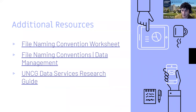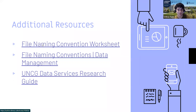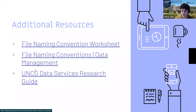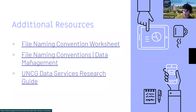Here are additional resources. There's a worksheet on file naming conventions that can be really useful - if it's a small project it's probably overkill, but if you're starting a grant-funded research project this is a great tool to use. It was developed by another data librarian at another institution. There's also a website with information on these topics if you want to look at it later or share with your classes. And of course we have our UNCG data services research guide. So are there any questions?